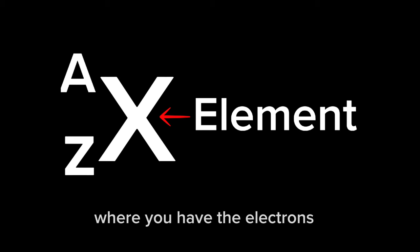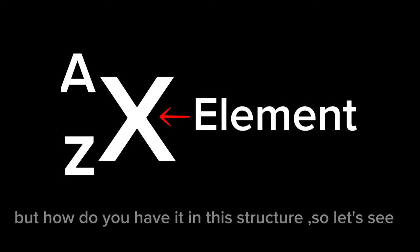The nucleus brings us to the modern atomic structure, where you have the electrons, protons, and neutrons. But how do we have it in this structure? Let's see.